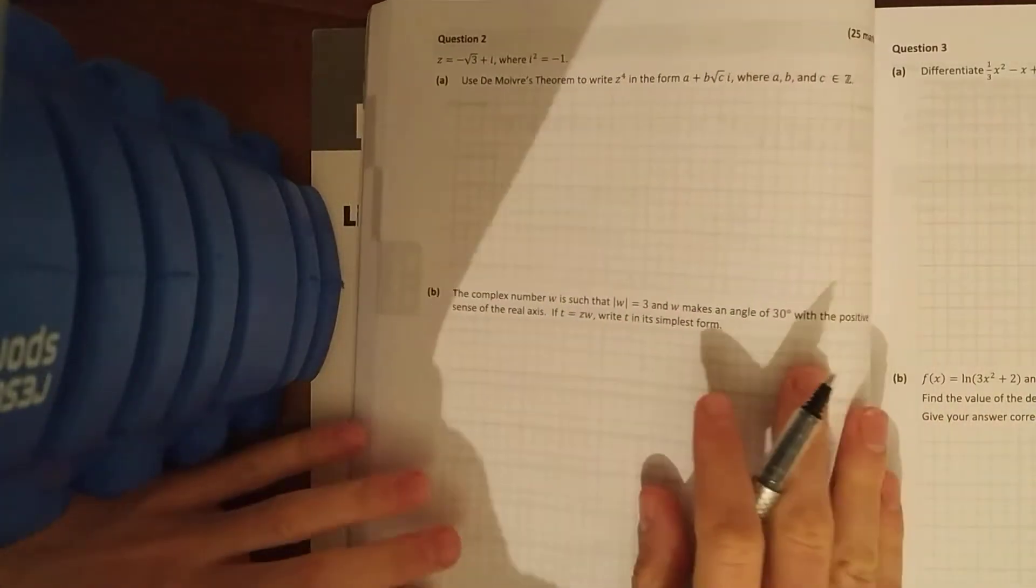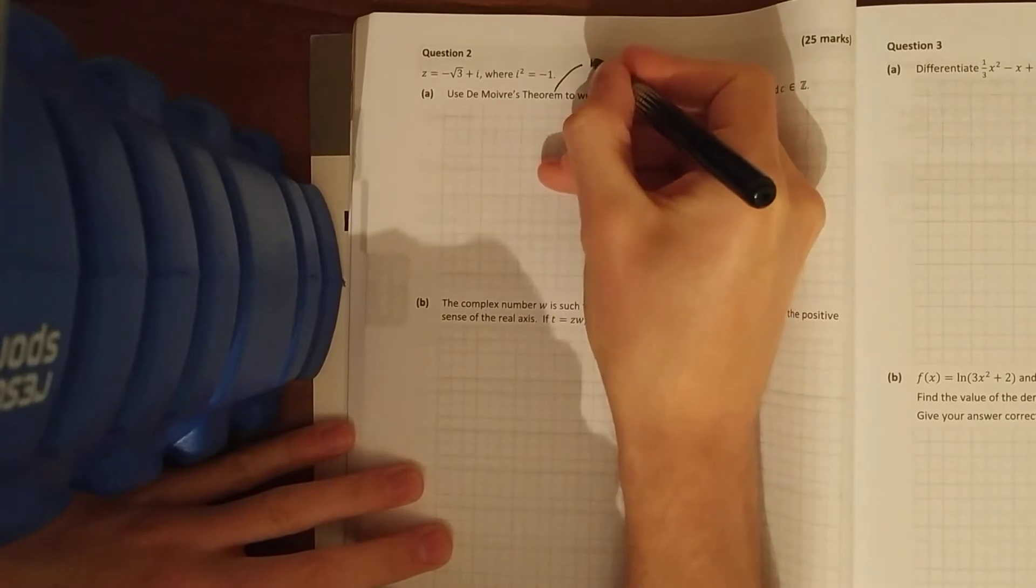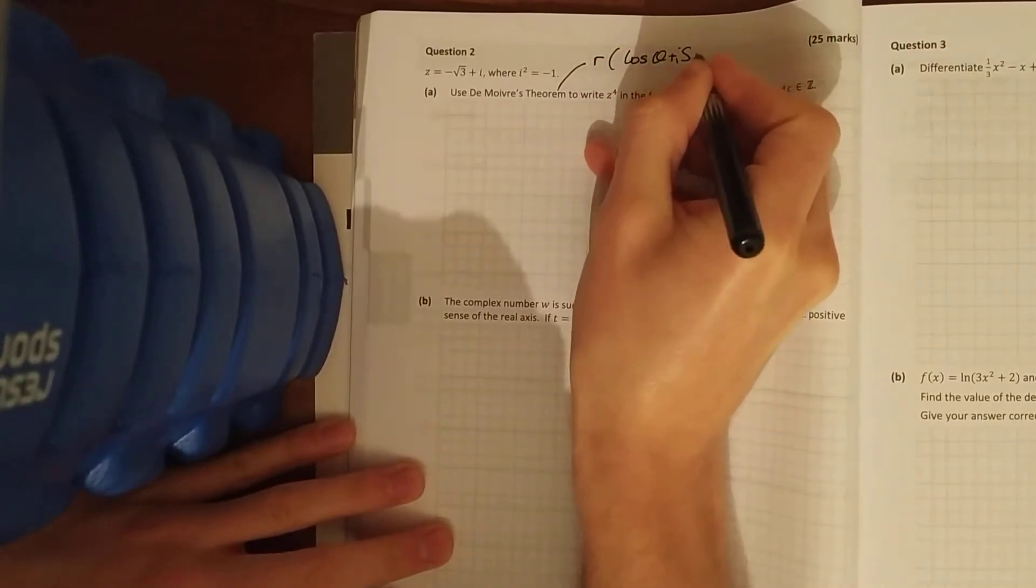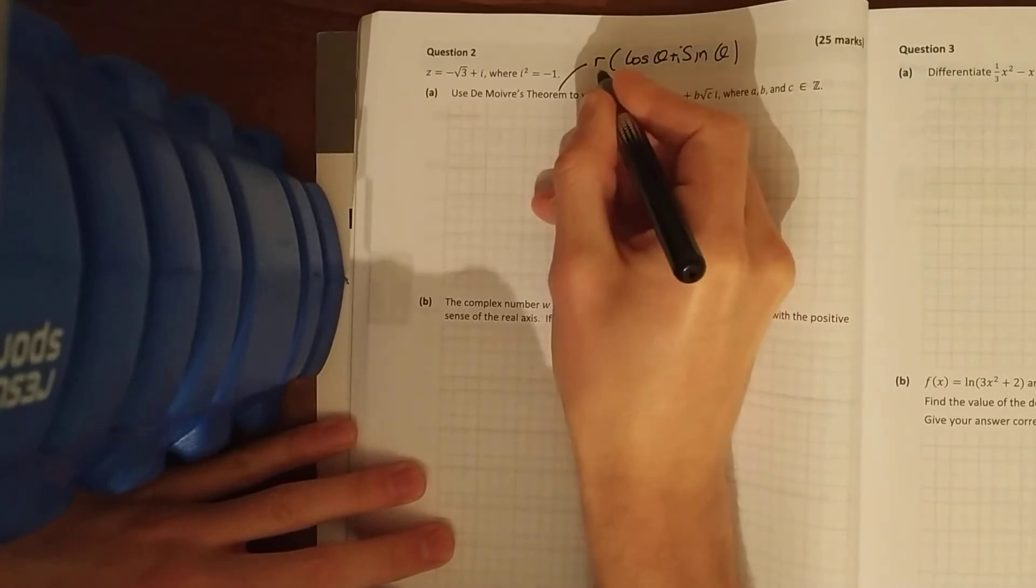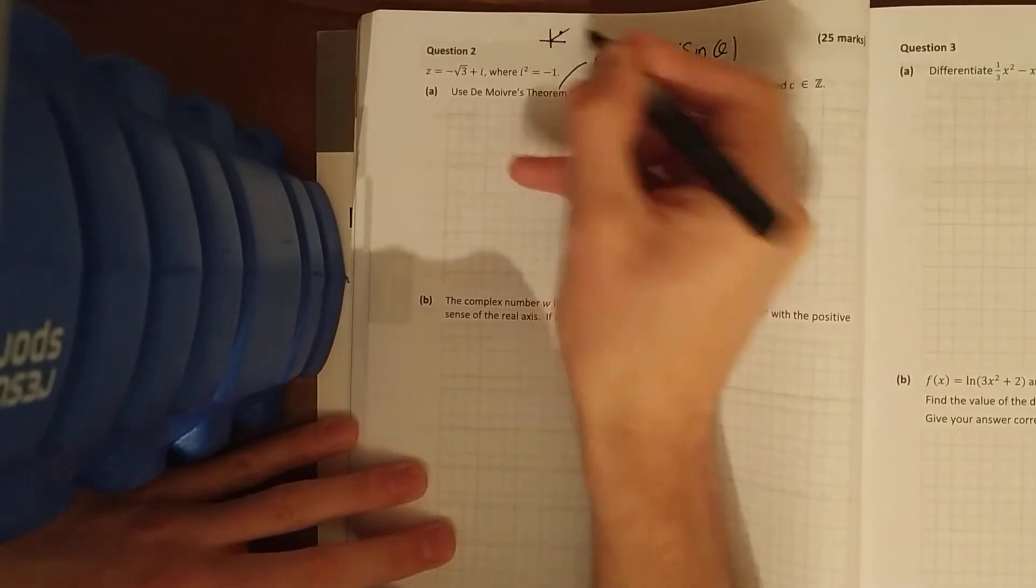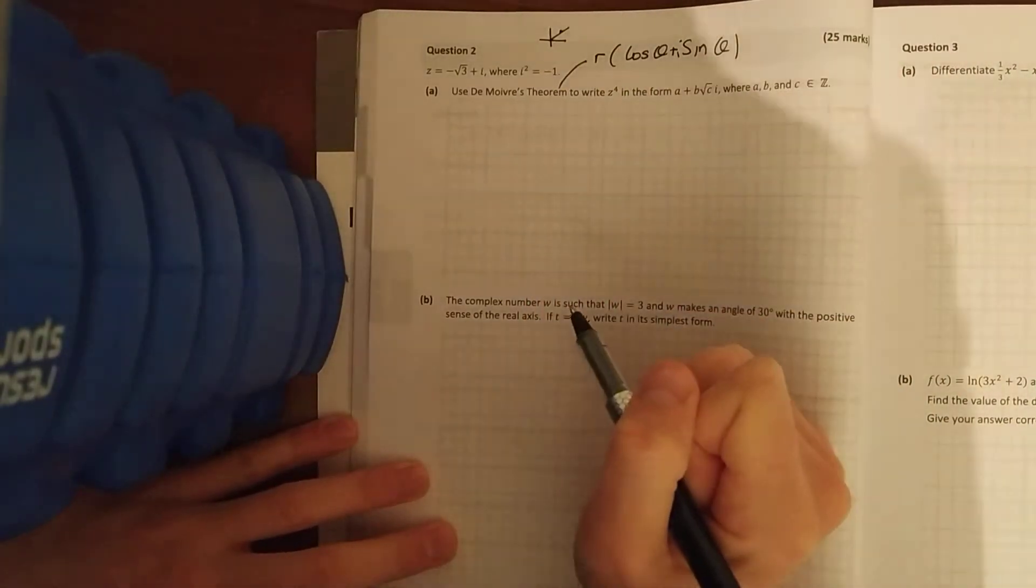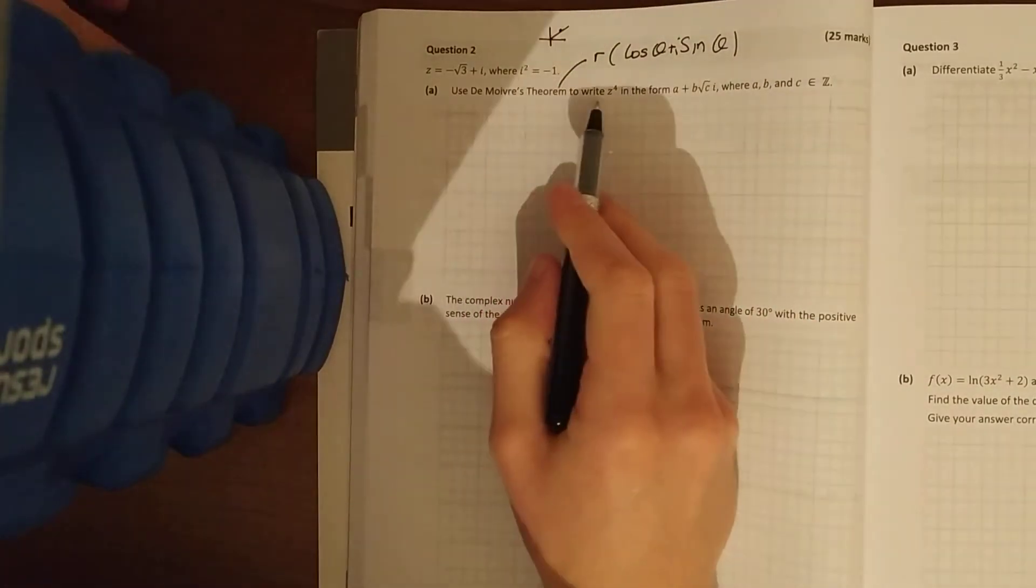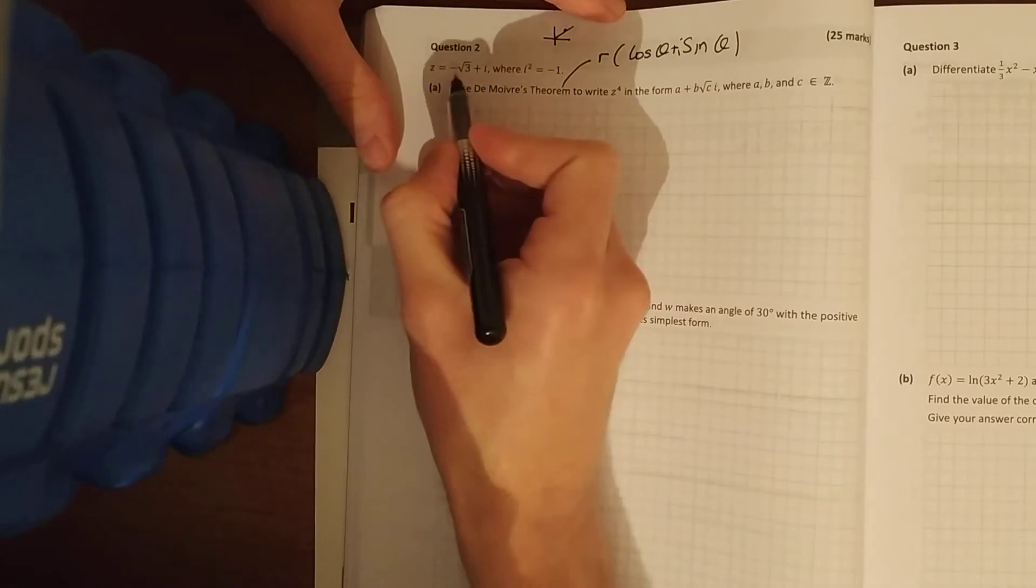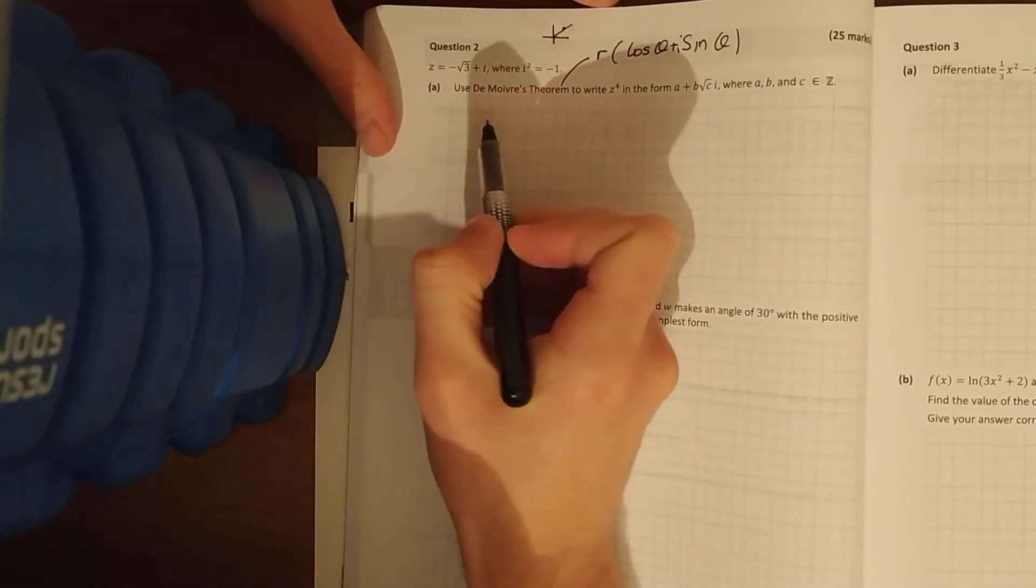So z is minus root 3 plus i, use De Moivre's theorem. Now if you look up your formula book, once you see De Moivre's theorem, r cos theta plus i sine theta, r is your modulus, which is your distance from your origin, and theta is known as your argument, so the angle it makes with the positive real axis. Use De Moivre's theorem to write z to the power of 4 in this form. So the first thing you must do is change this into polar form.